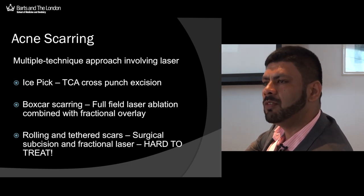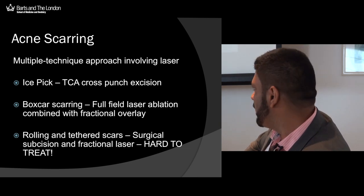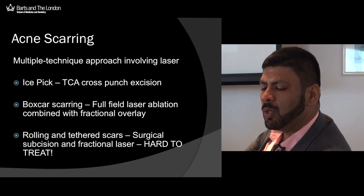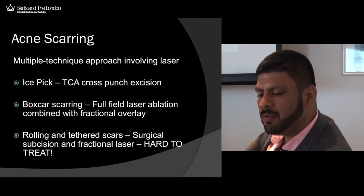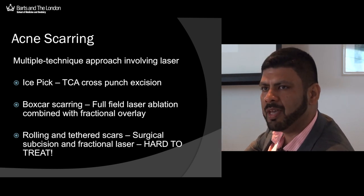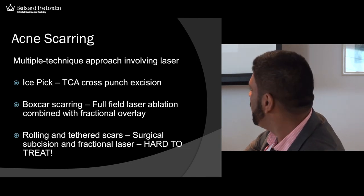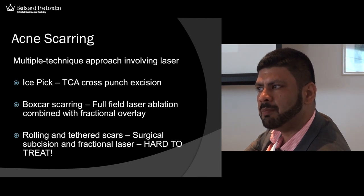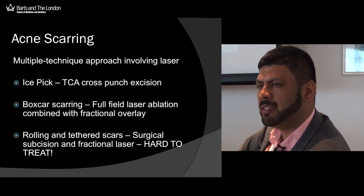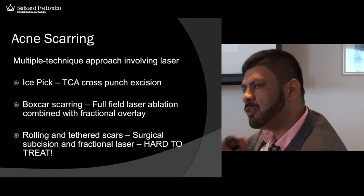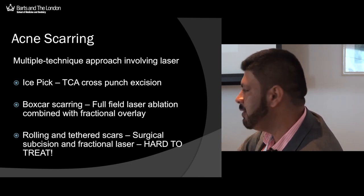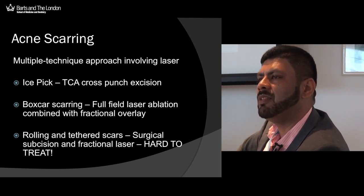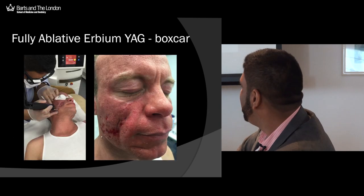Box-car scarring responds very well to full ablation and shouldering of the scars — something I do very often with my erbium laser to improve the sharp contours of the box-car scar. Rolling and tethered scars are more difficult. I've been using Mark Taylor's method of full-field subcision under tumescent anaesthesia — using a high-flow tumescent pump to hydro-dissect the cheek, create closure of perforating vessels with the adrenaline in the tumescent mix, and then use a large probe to slide in the superficial cutaneous plane and dissect all those tetherings.